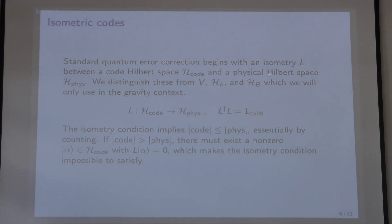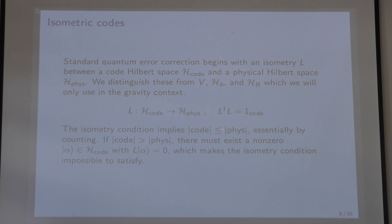Standard quantum error correction begins with an isometry L between a code Hilbert space H_code and a physical Hilbert space H_phys. There's an isometry condition which says that L†L should equal the identity on the code space. The isometry condition implies the most basic fact: the code space has to be smaller or equal in dimension compared with the physical Hilbert space. If the code subspace were greater in dimension than the physical Hilbert space, there must exist a non-zero vector in the code space which is annihilated by the encoding map, making the isometry condition impossible to satisfy.